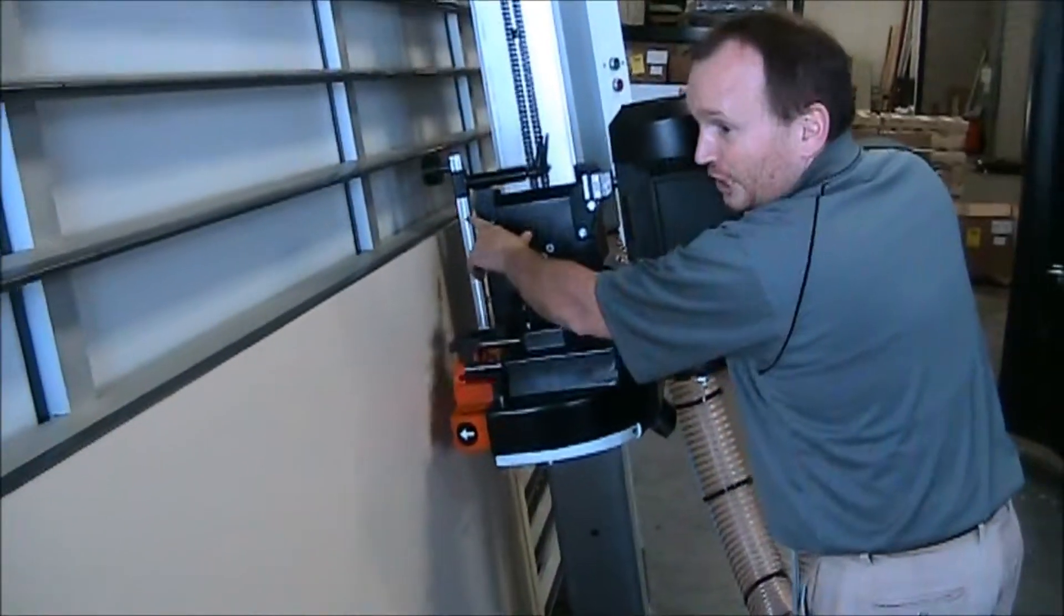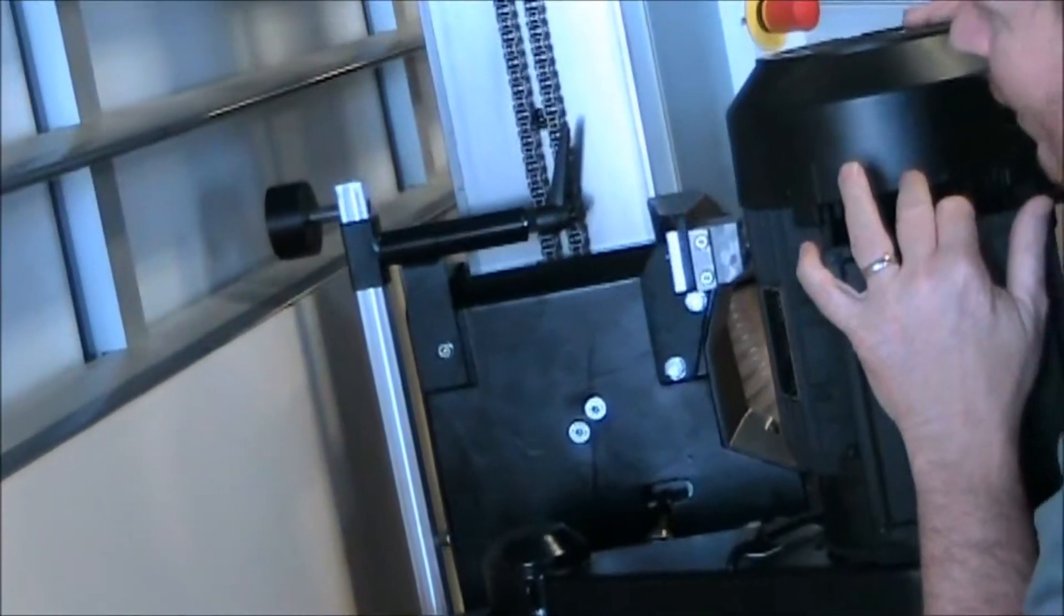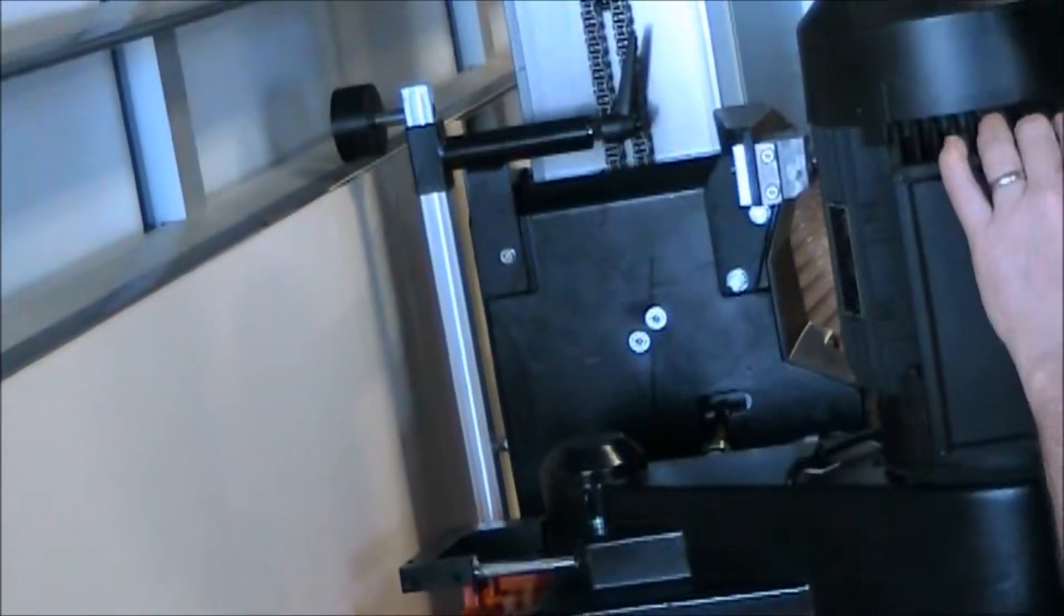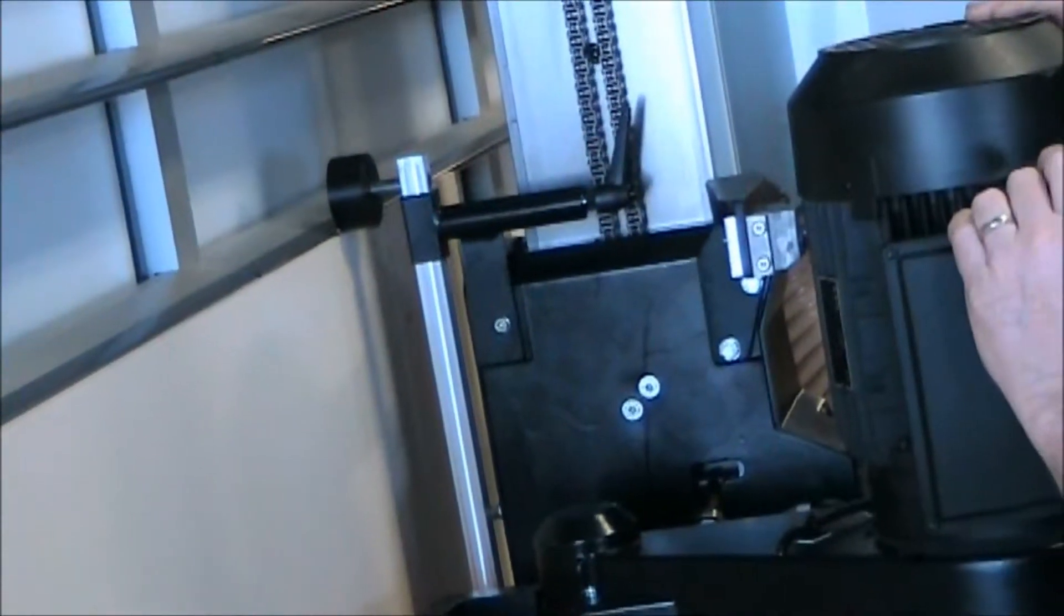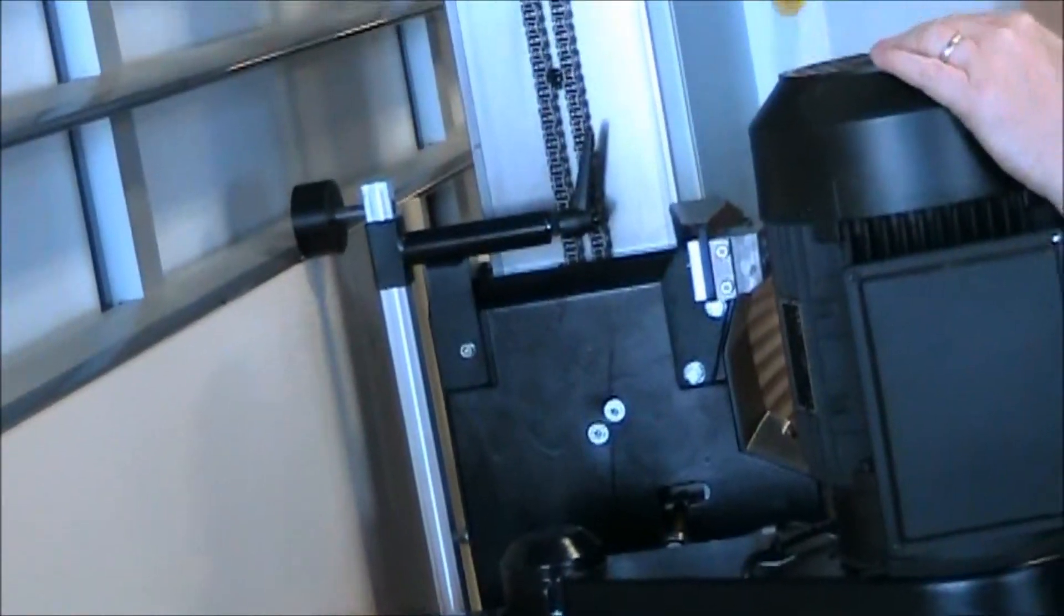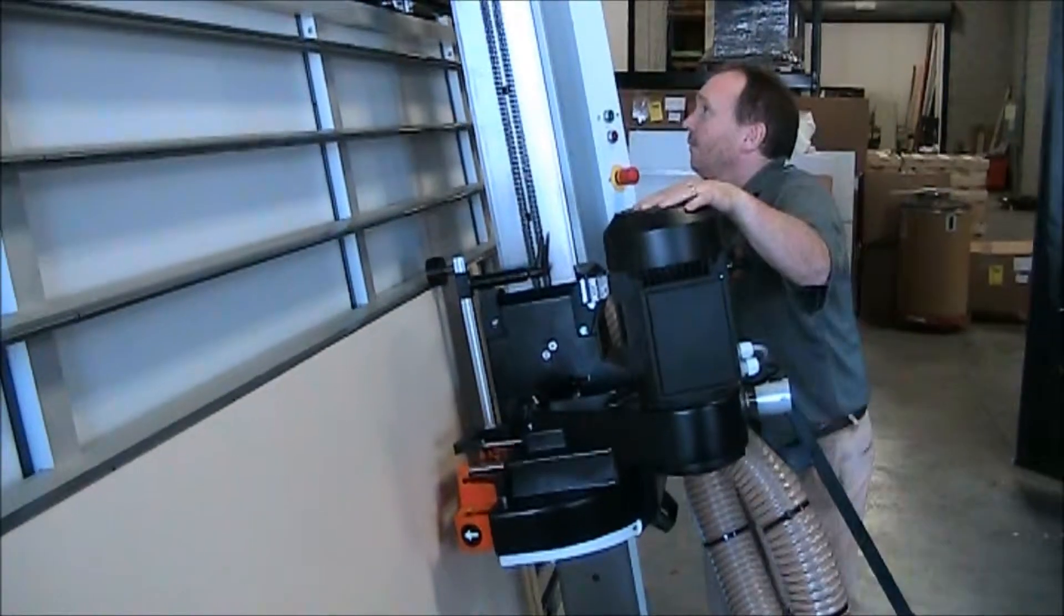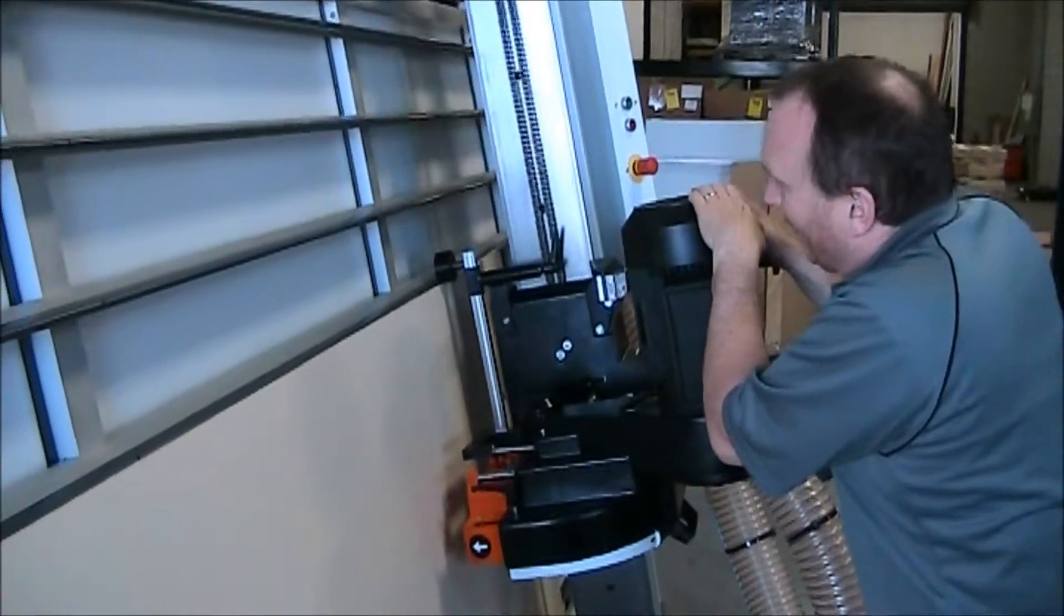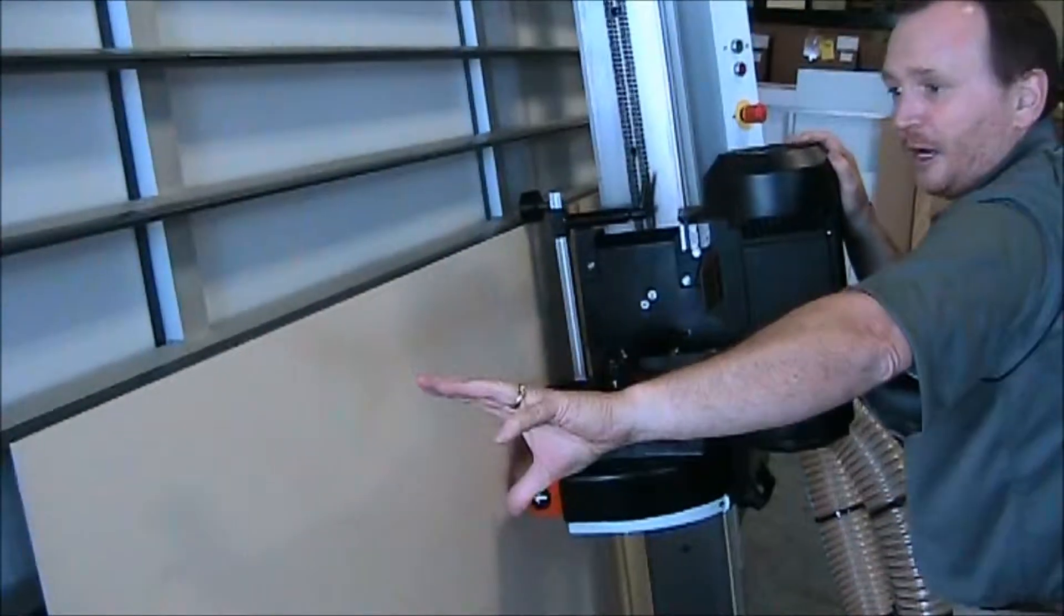Now I also have a reiteration stop that's set up on this machine. So what I can do is if I want to repeat that same cut every time through the rip position, I can set that reiteration stop so that it rides right on the top of my panel. That just rolls along the top of your panel, so that's going to keep your nice straight cut all the way through.